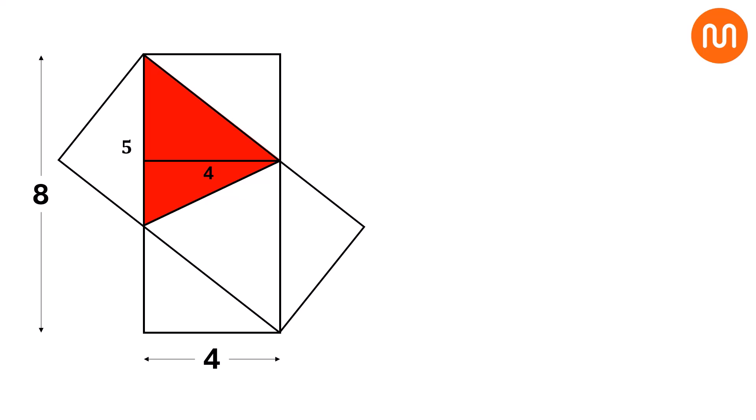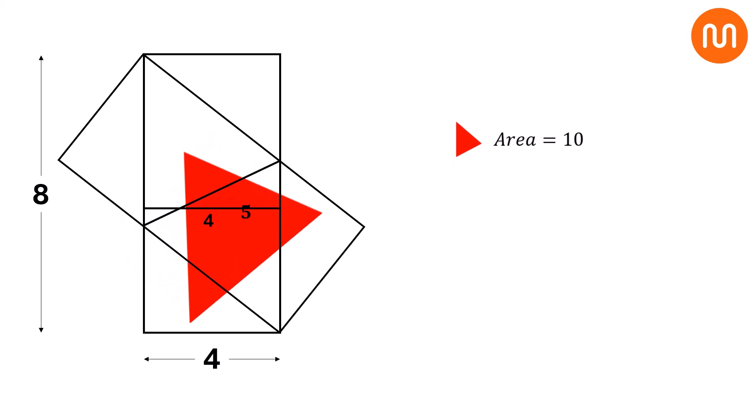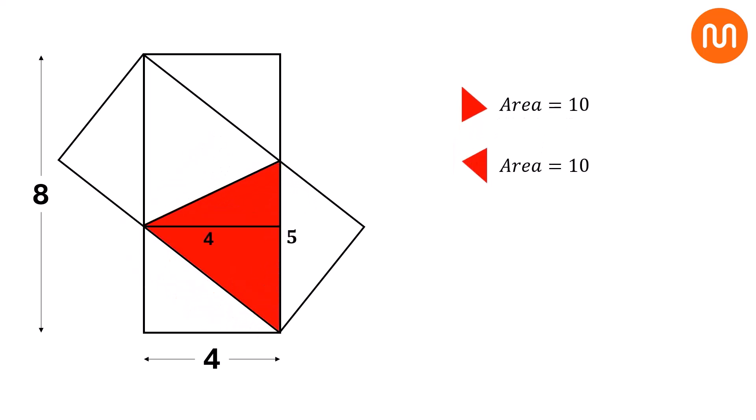So, the area of this red triangle is 1 half times base times height. So, the area will be 1 half times 5 times 4, which is equal to 10. Similarly, the area of the other red triangle is also 10.